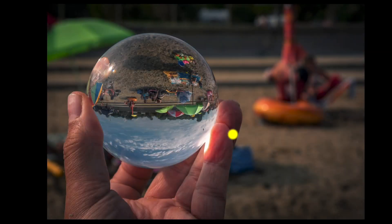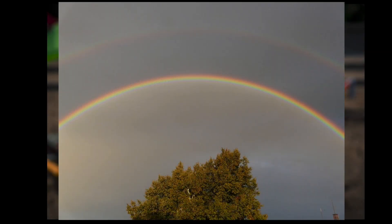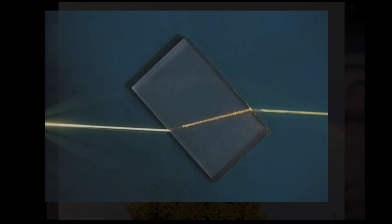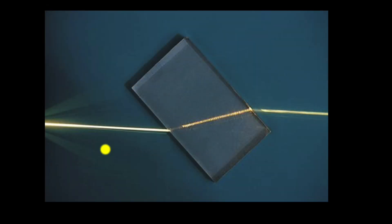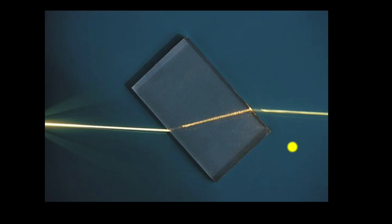We see incredible optical illusions all around us almost every day. But what causes them? One of the main reasons is that when light goes from one medium to another, like from vacuum or air into glass, it changes its speed, because of which it bends. This bending is what we call refraction.